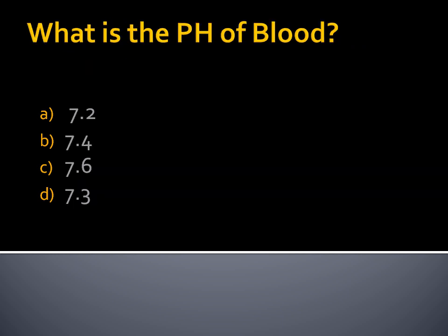What is the pH of blood? Options are 7.2, 7.4, 7.6, or 7.3. Our answer is pH of blood is 7.4.